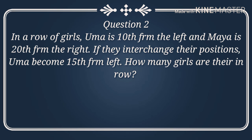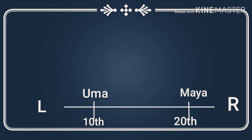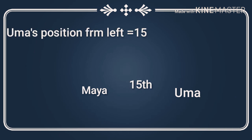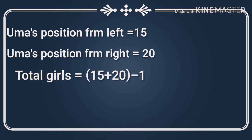Question two: you are sitting in a row of girls. Uma is 8th from the left and Maya is 22nd from the right. If they interchange their positions, Uma becomes 15th from the left. How many girls are there in the row? After applying the formula, the answer is 34.